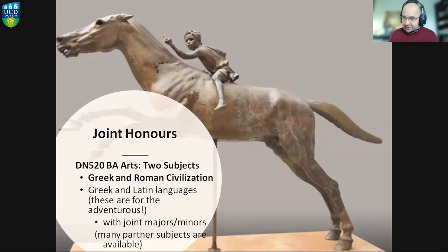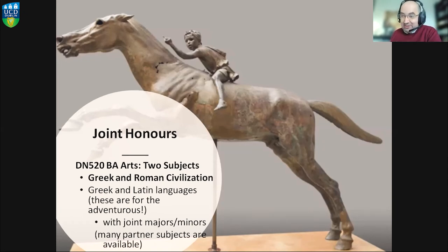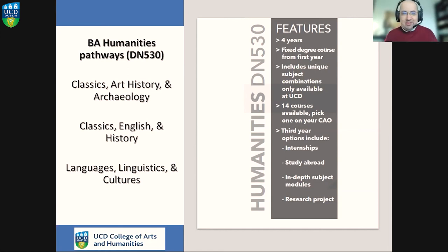As you'll see, it's a broad subject with a lot of links and connections. We offer various pathways to study it. If you'd like to study it as part of the DN520 program — the Joint Honours Arts — you can study it in partnership with any other subject the timetable allows. We get a lot of students coming through with Greek and Roman civilization alongside history, English, film studies, or drama studies. We also get adventurous students who want to study Greek and Latin — it's not necessary to know the languages, but we'll maintain that option. Or if you wanted something more focused, you could take the four-year BA Humanities Pathway program, like Isolt, on Classics Art History and Archaeology — the only course in Ireland where you can study all three subjects together.